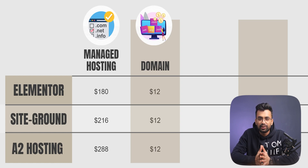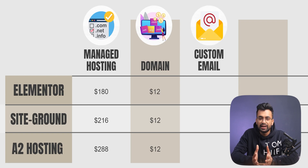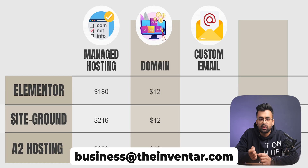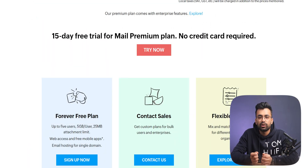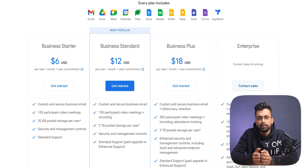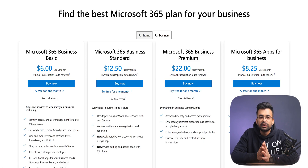To make your business look professional, you should use a custom email address — like "business at theinventor dot com" — instead of something like "theinventor at gmail dot com." People do pay attention to that. To get a custom email, you can either get it for free from Zoho Mail, or pay $6 per month per user for Google Workspace or Microsoft 365. We'll go with Zoho's free plan for now.